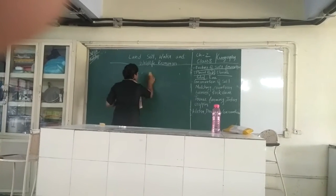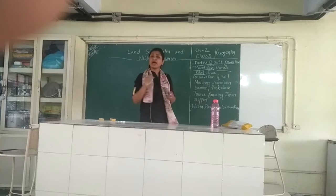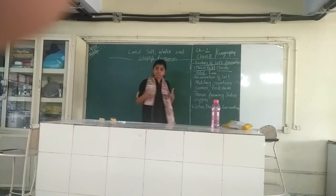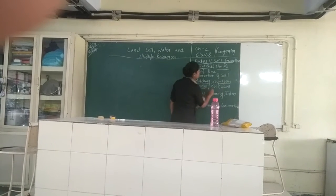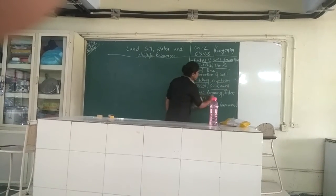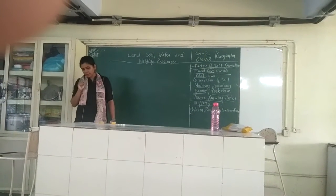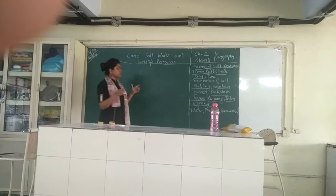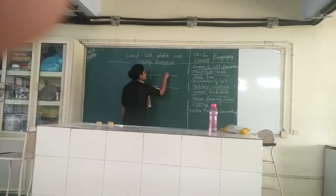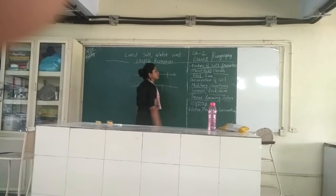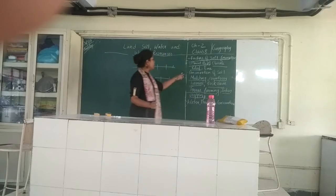Now, the soil is being degraded day by day, so we have to conserve the soil. The ways of conservation include practicing mulching, contour barriers, and terrace farming. Mulching means covering the bare ground between crops so that the soil is not eroded from that place.